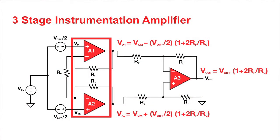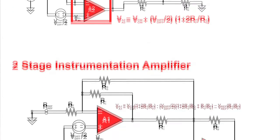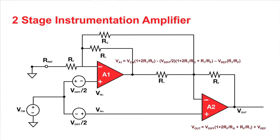The classic three-stage instrumentation amplifier was developed to add high input impedance buffer amplifiers ahead of the simple diff amp subtractor circuit in order to achieve high input impedance, high CMRR, and high gain in just one device.